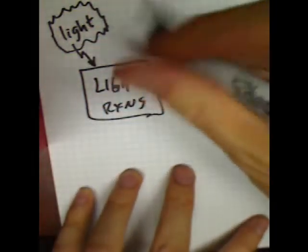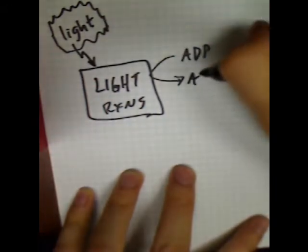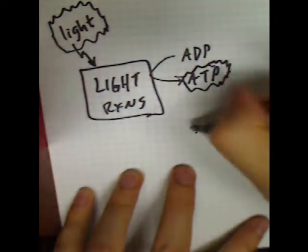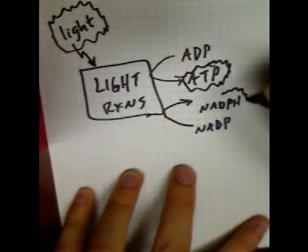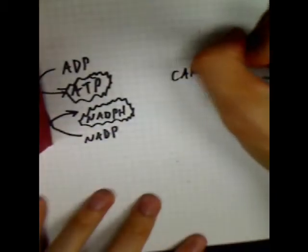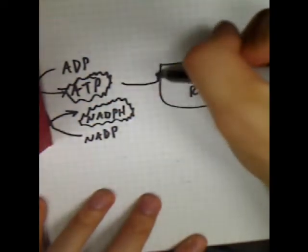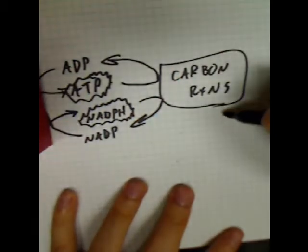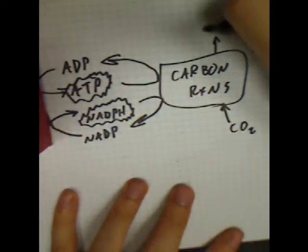As we saw, the light reactions take energy from light and use that energy to drive reactions, turning ADP molecules into ATP molecules, which are energy carriers, and taking NADP molecules and reducing them into NADPH molecules, which are also energy carriers. What we're going to talk about now is how the carbon reactions take that NADPH and ATP, take the energy out of them — regenerating ADP and NADP — and use that energy to take carbon dioxides from the air and join the carbons together to make carbohydrates.